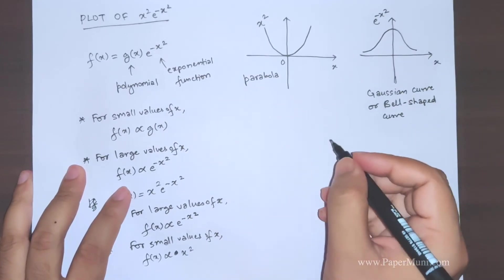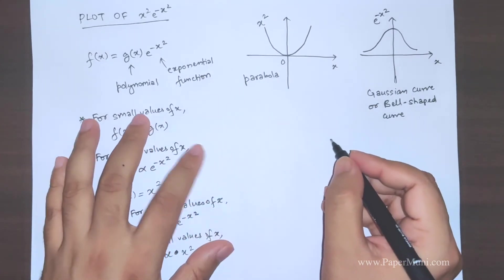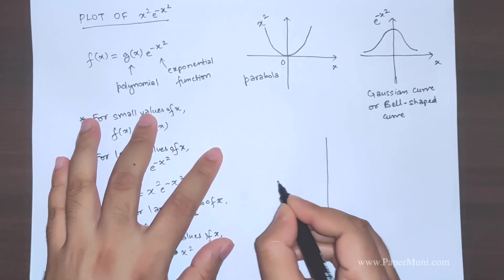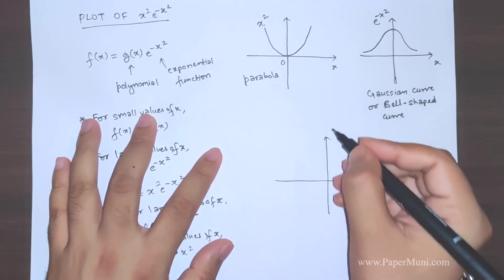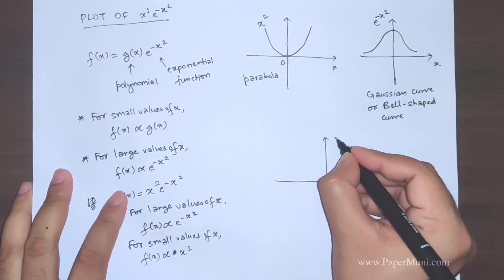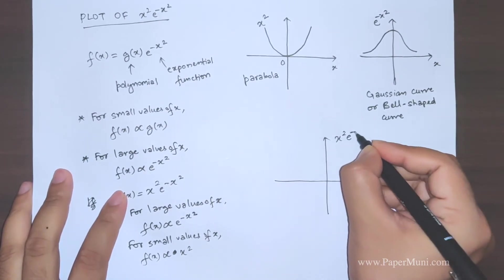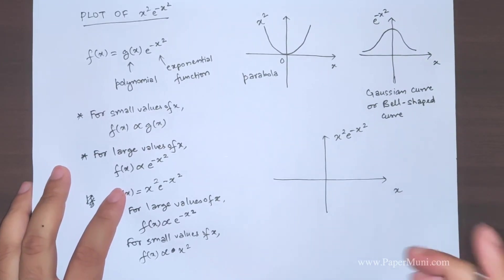Now we need to combine these two graphs for different ranges of x. So this is the x-axis, now we have to plot the given function which is x square multiplied by exponential minus x square.